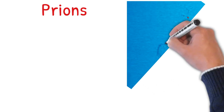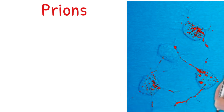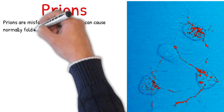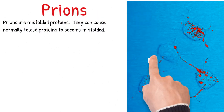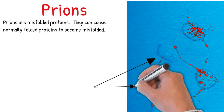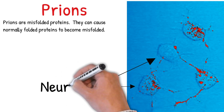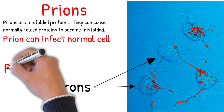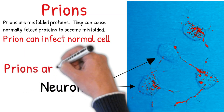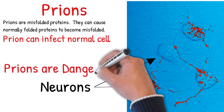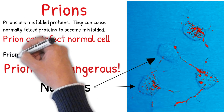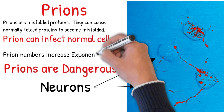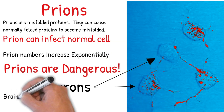Creutzfeldt-Jakob disease is caused by prions. Prions are misfolded proteins that can cause normally folded proteins to become misfolded. Prions look like live microorganisms because they have infectious properties — they can infect normal cells, collapsing nearby protein molecules into the same misfolded shape. Prions are dangerous because they promote refolding of native prion protein into the diseased state, causing the number of misfolded protein molecules to increase exponentially, leading to a large quantity of insoluble protein in affected cells.